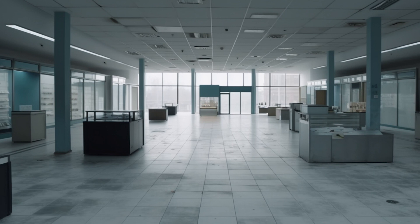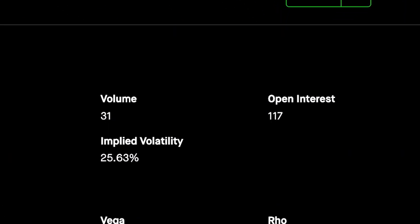One way to determine the liquidity of an option is to look at its open interest and trading volume. Open interest is the total number of outstanding option contracts, while trading volume is the total number of contracts that have been traded in a given period. Options with high open interest and trading volume are generally considered to be more liquid. By choosing options with high liquidity, you can help ensure that you're able to enter or exit a position quickly and easily, which can be especially important if you need to make a trade quickly to take advantage of a particular market condition or news.